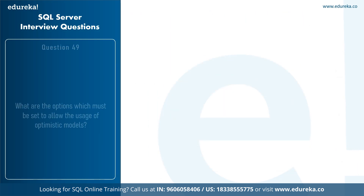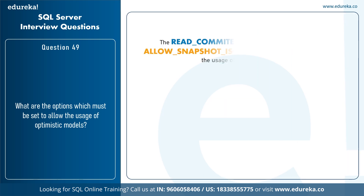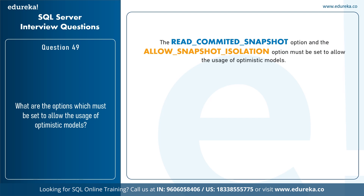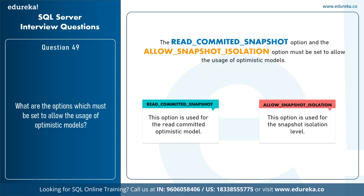The next question is: what are the options that must be set to allow the usage of optimistic models? The two options are READ_COMMITTED_SNAPSHOT and ALLOW_SNAPSHOT_ISOLATION. The READ_COMMITTED_SNAPSHOT option is used for the read committed optimistic model, and the ALLOW_SNAPSHOT_ISOLATION option is used for snapshot isolation levels.